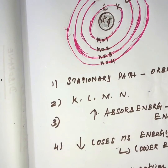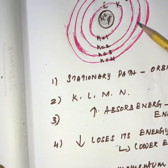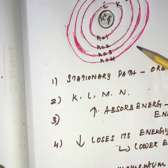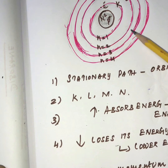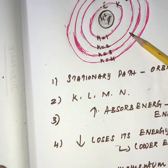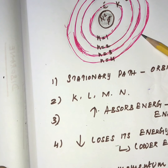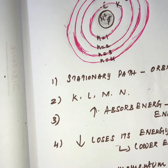As long as the electron is in a particular orbit, it is associated with that energy level. If an electron moves from a lower energy level to a higher energy level, it will absorb energy. If an electron moves from a higher to a lower energy level, it will lose a quantum of energy. The energy path or orbit is calculated by the angular momentum.